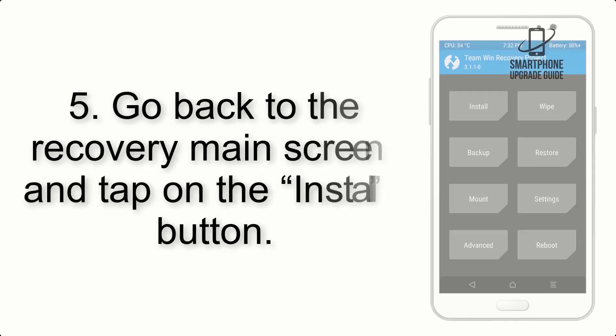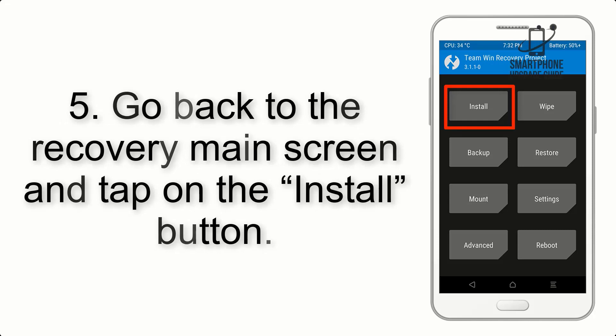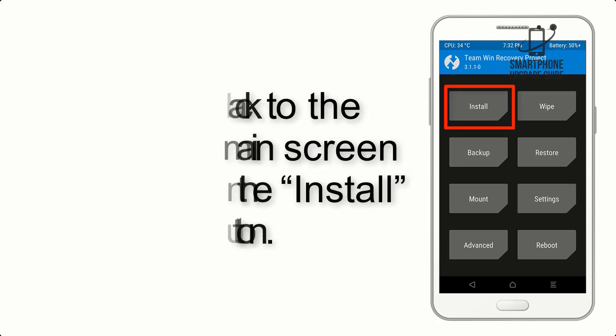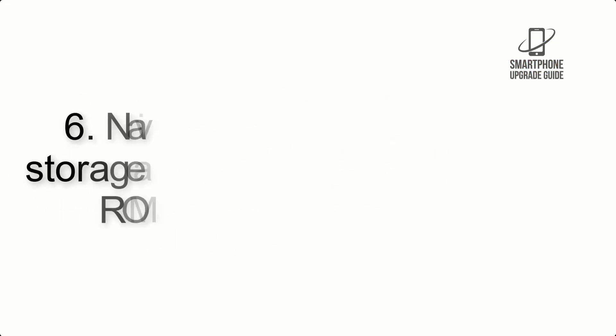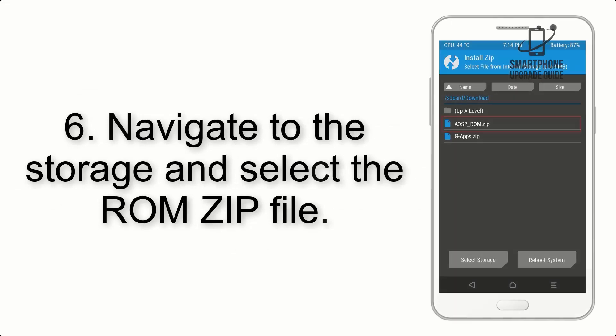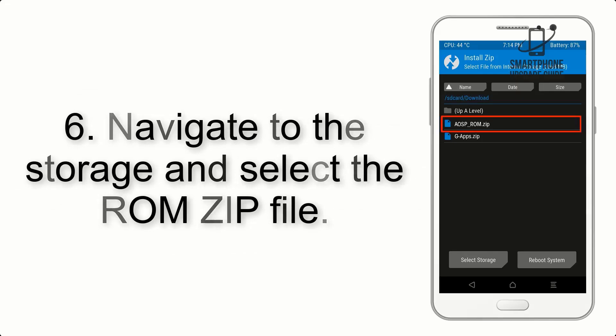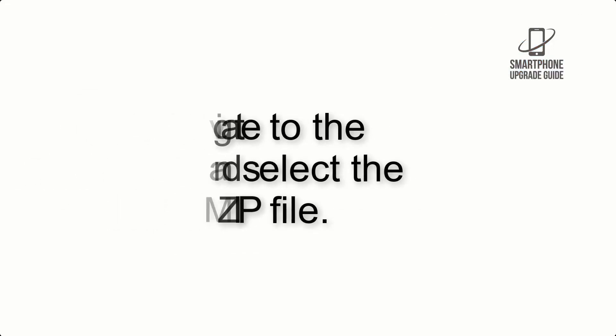Step 5: Go back to the Recovery main screen and tap on the Install button. Step 6: Navigate to the Storage and select the ROM ZIP file.